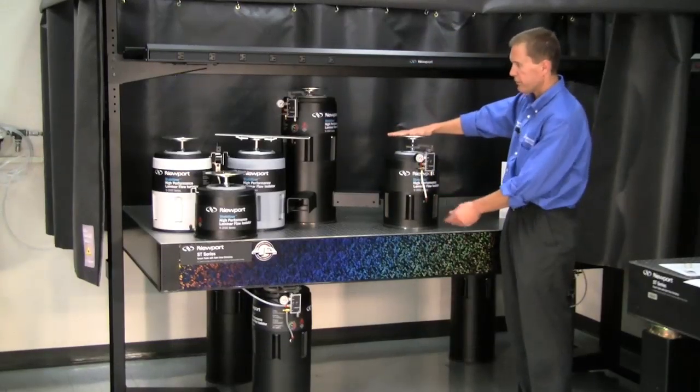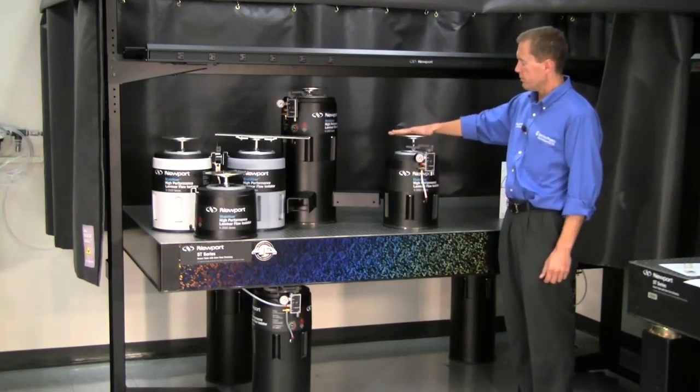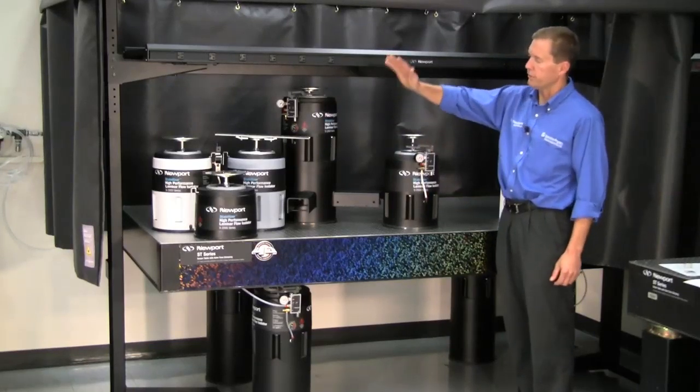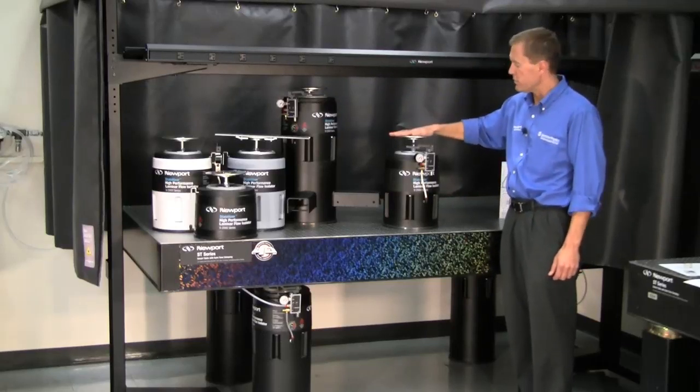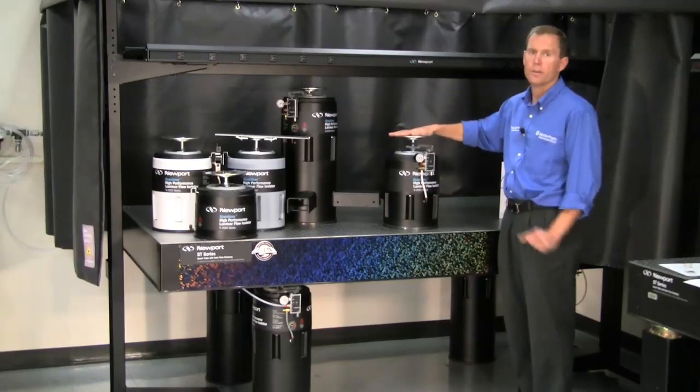We have a standard version here that's at a little bit different height than the other versions because this isolator family, whether it's a clean room, non-magnetic, tie bar and caster, or standard isolator, comes in heights ranging from 10 inches all the way up to 28 inches.